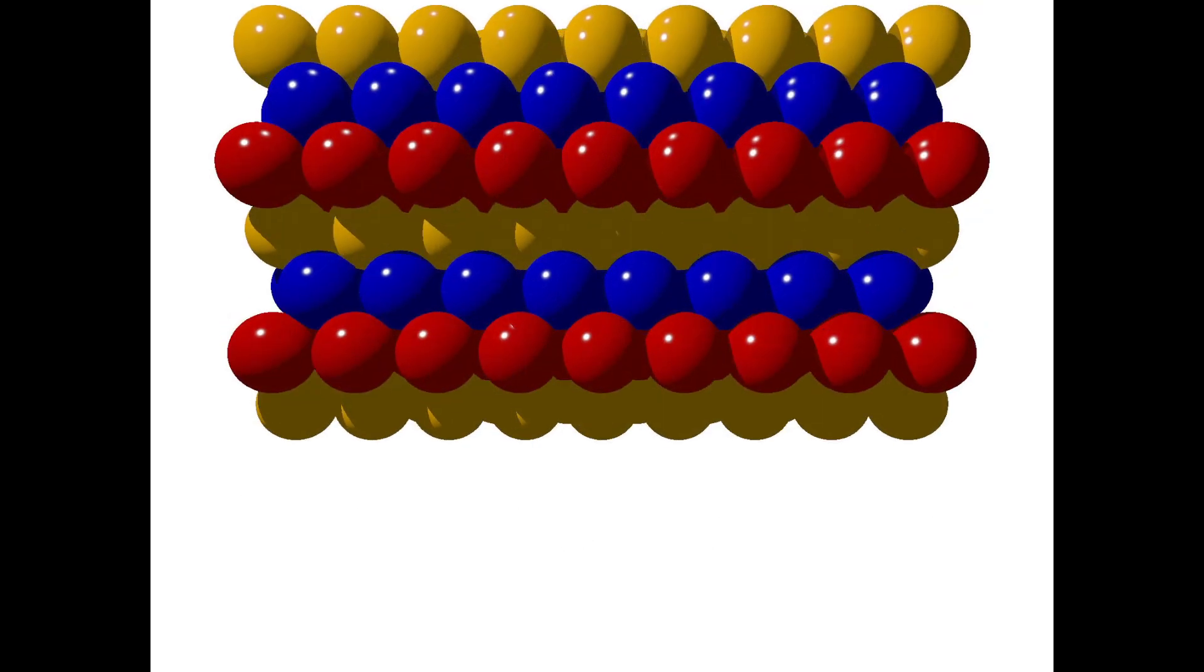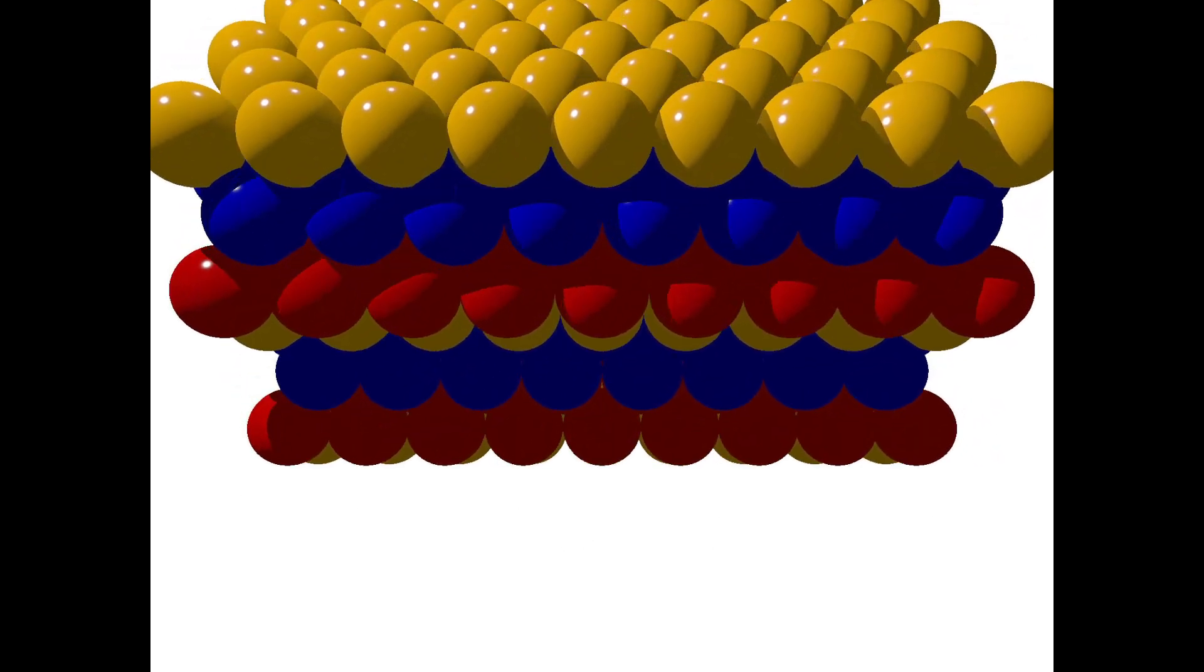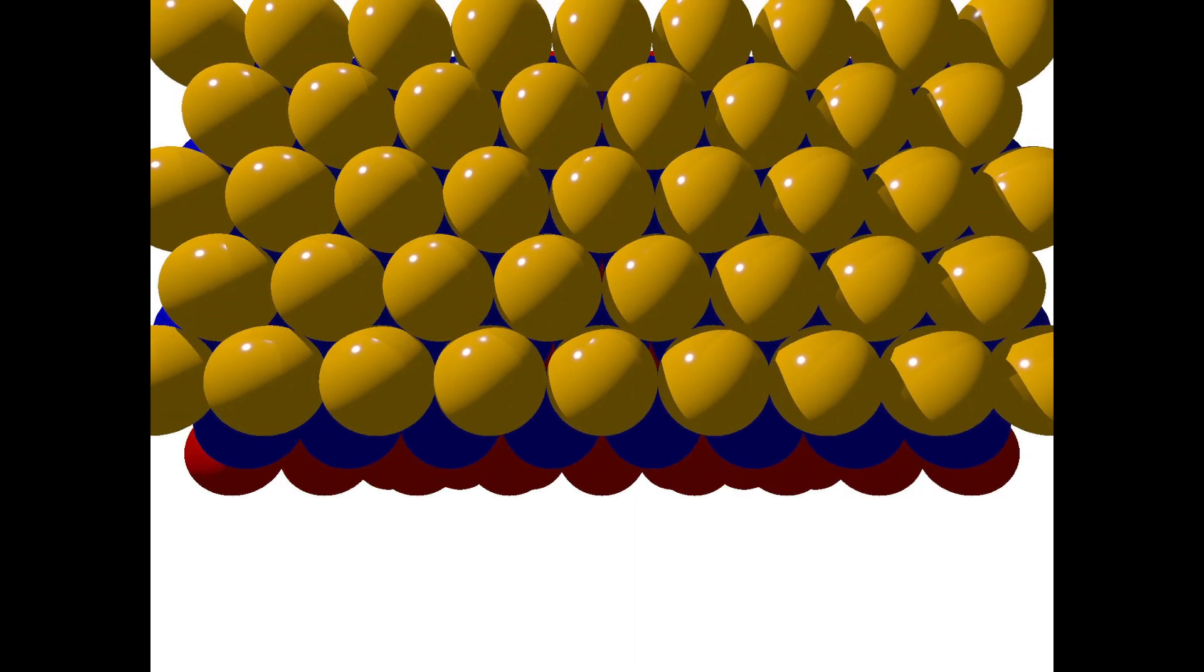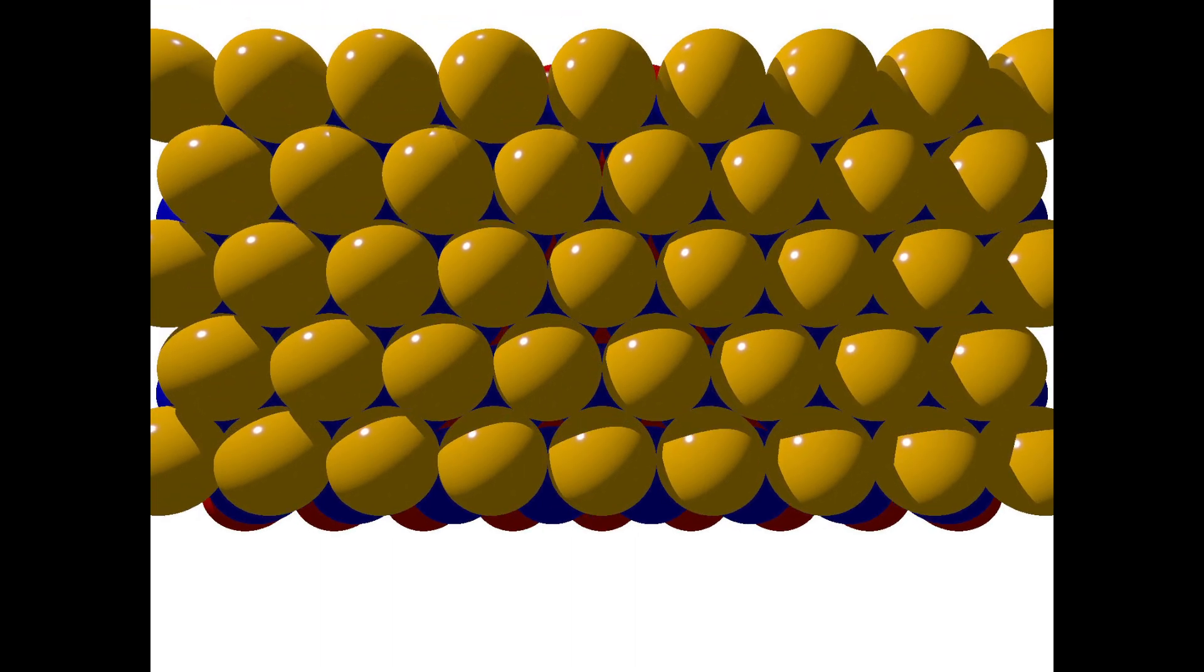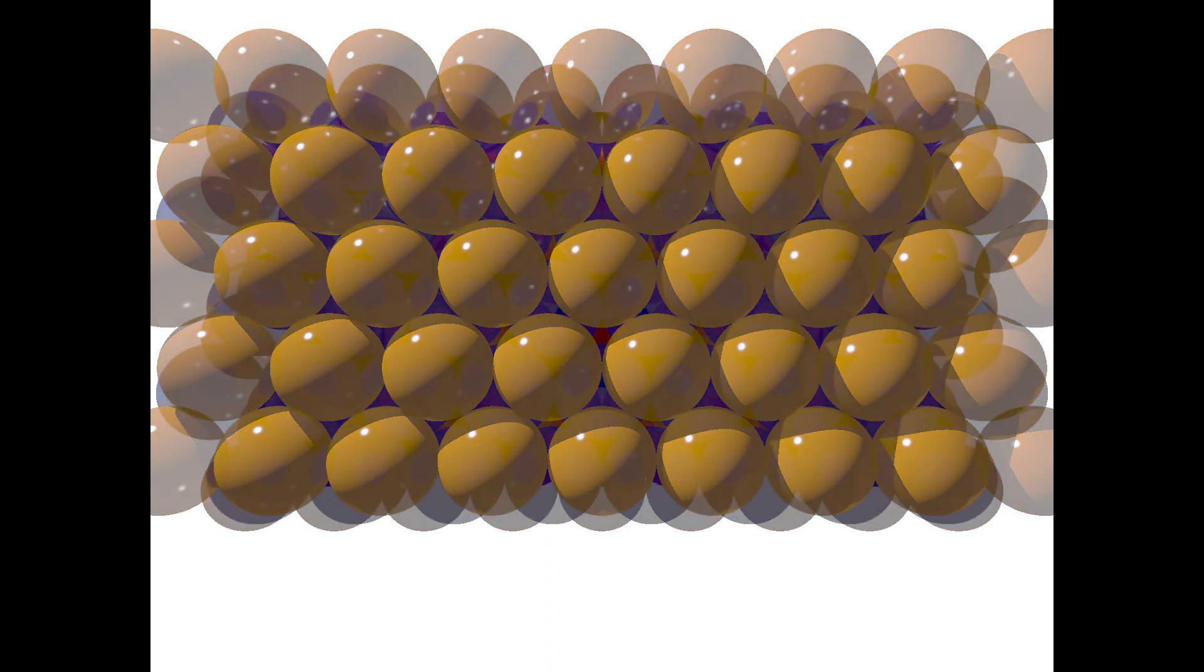Rotating this structure so we look down on top of one of the layers, we can see again these hexagonal shapes. However, to understand why this structure is called cubic close packed, I'm going to isolate a different feature.